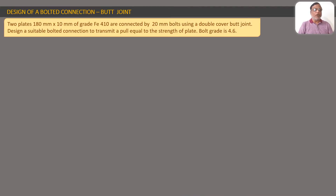In this video, we are going to solve a numerical problem on butt joint using bolts. The problem statement is: Two plates 180 mm by 10 mm of grade FE410 are connected by 20 mm bolts using a double cover butt joint. Design a suitable bolted connection to transmit a pull equal to the strength of the plate. The bolt grade is 4.6.